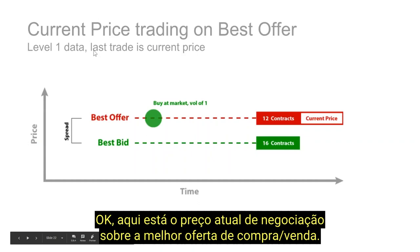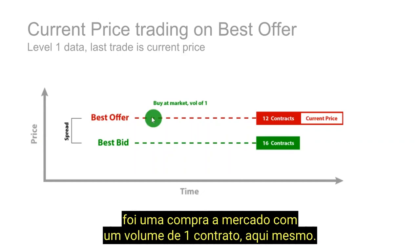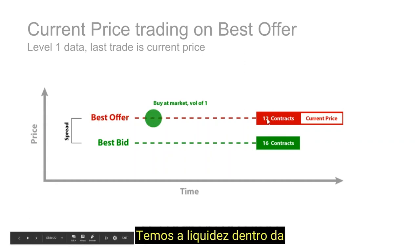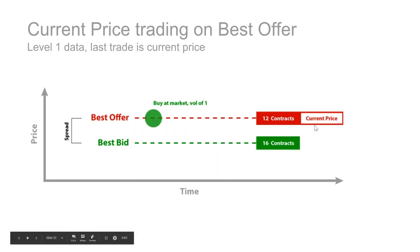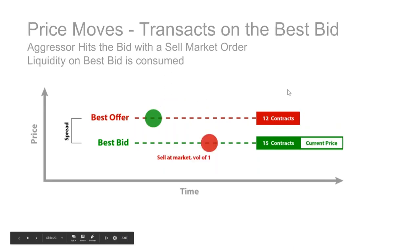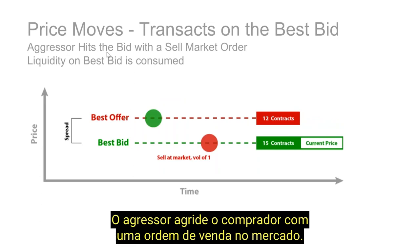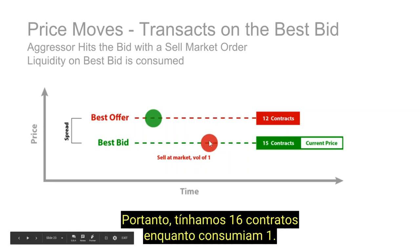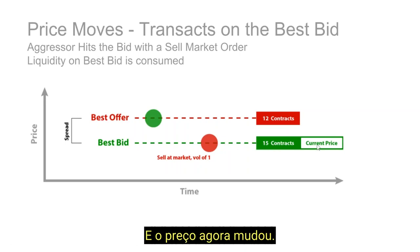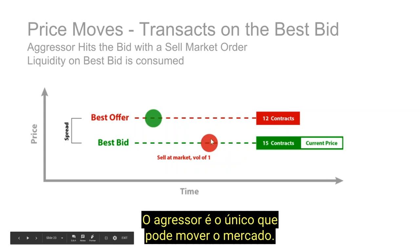Here's current price trading on the best bid and offer. The last trade that took place was a market buy with a volume of one. We have 12 contracts on the offer and 16 contracts on the best bid. Now, a very simple market sell order: the aggressor hits the bid with a market sell order, consuming the liquidity. We had 16 contracts — they consumed one and now we have 15, and price has moved one tick. This is how the market moves. The aggressor is the one that can move the market.